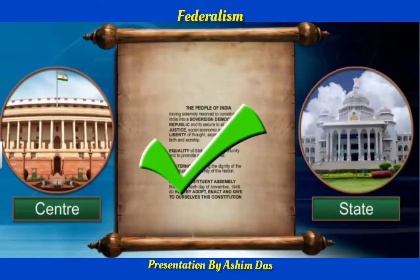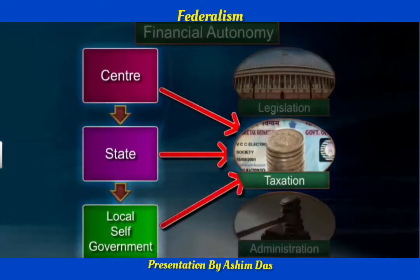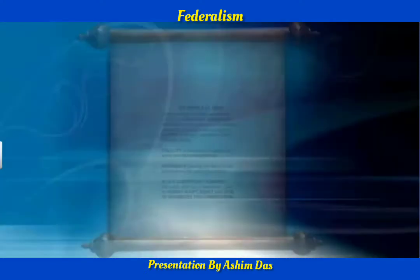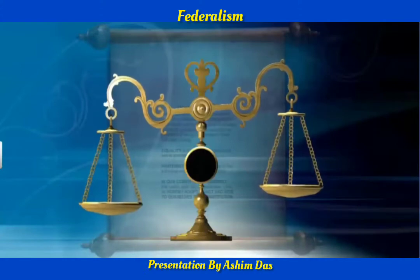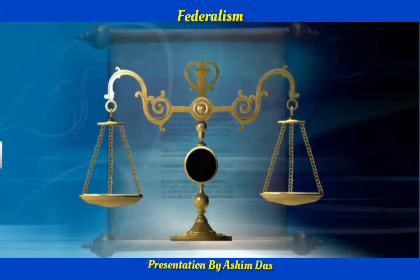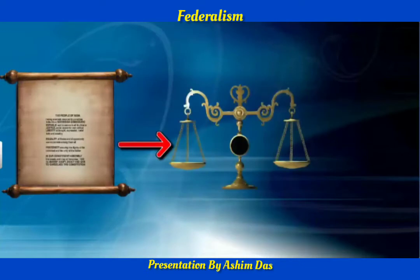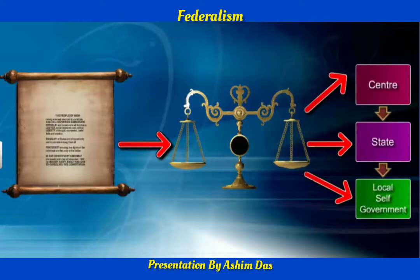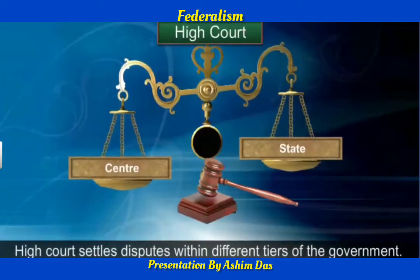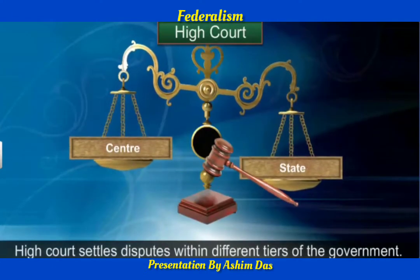Such changes require the approval of both tiers of government. Every level is free to impose taxes and raise funds through remunerative enterprises, but the sources of revenue for each tier are also clearly specified. An independent judiciary is the very essence of federalism, with courts having the power to interpret the constitution and the powers of the different tiers.